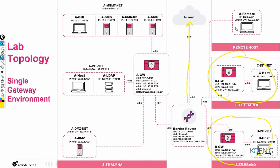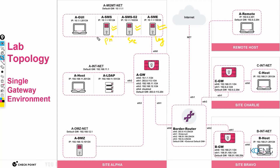There are three sites — Alpha, Bravo, and Charlie — and one machine on the public network. In these three sites, we have a management server, a secondary management server, a primary management server, and a log server. The AGUI machine is the graphical user interface machine where the user logs in. In the other branches, we have a firewall protecting each gateway.